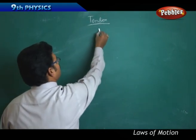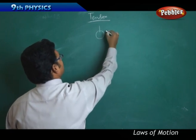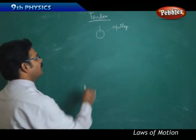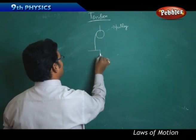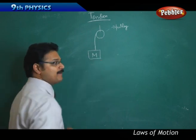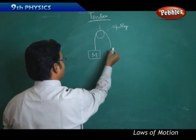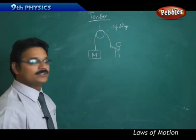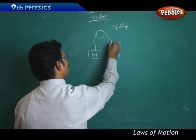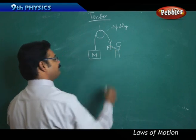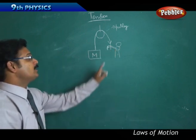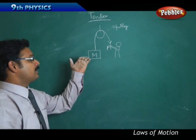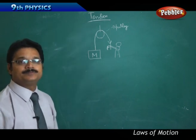Now we see some more examples and applications of tension. There is a frictionless pulley with a rope over it. One side of the rope is attached to a block of mass M, and from the other side a person is pulling the rope downward. The question is: how much force F does he have to apply to lift the block M upward?